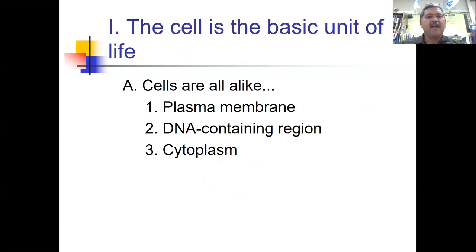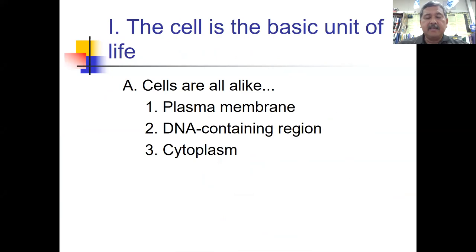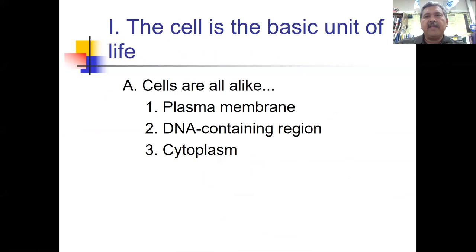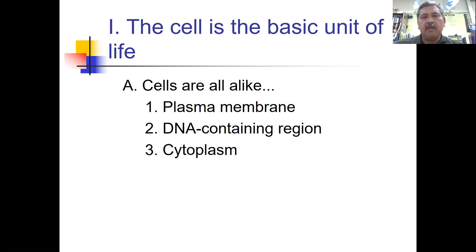Structure and function — this is one of those organizing principles in biology. We say that the cell is the basic structural unit of life and the basic functional unit of life. That means all living organisms are made up structurally of cells, and the functions that living things go through in metabolism are all a result of cellular functions.